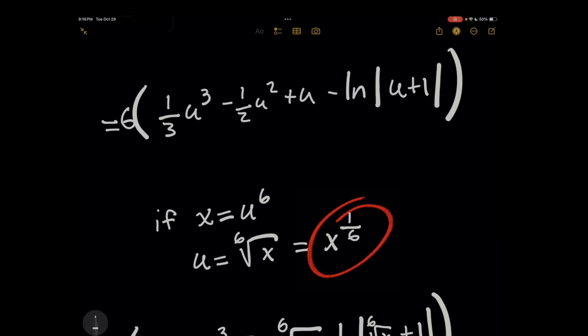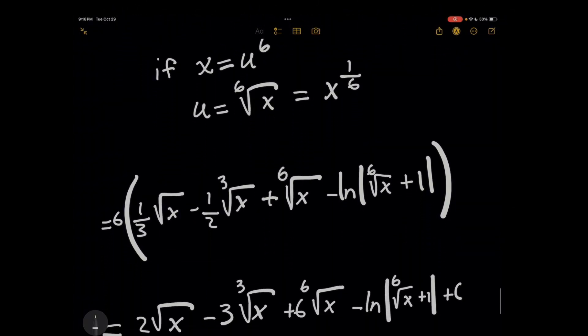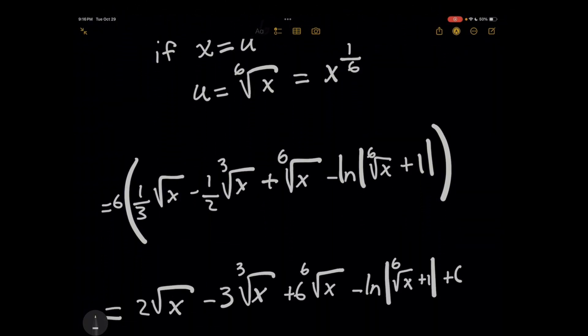So everywhere we see a u now, we're going to plug in x to the 1/6 and then multiply the 1/6 by whatever power we're raising to to get the final power of x. So you can try this on your own, but by doing the work, you're going to find out that for the inner part of the parentheses here, you'll get 1/3 x to the 1/2.